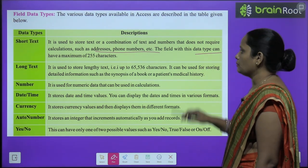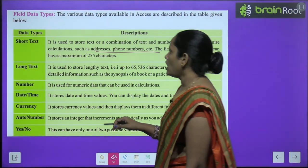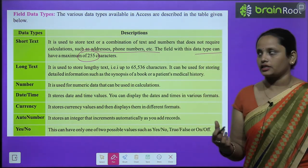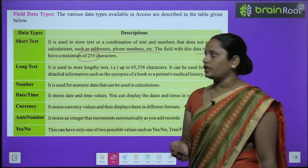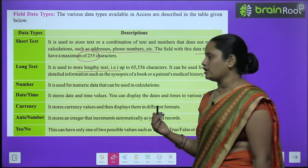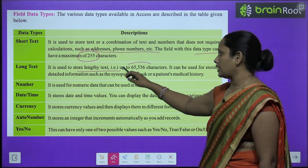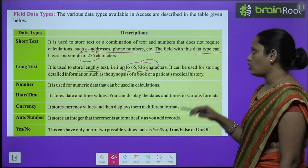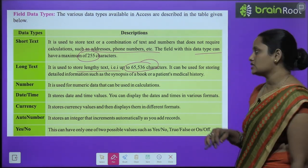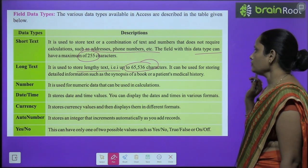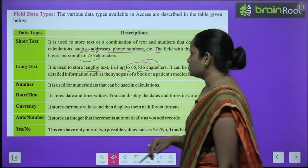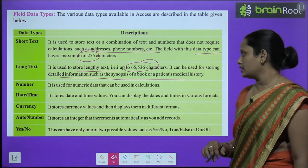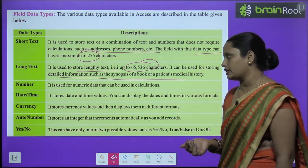The Short Text field can have a maximum of 255 characters. Then comes Long Text, which is used for lengthy text — large amounts of characters. It can store up to 65,536 characters and is used for storing detailed information such as a patient's medical history or records.